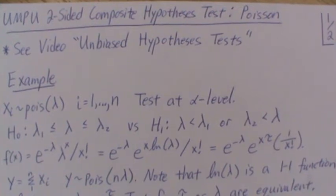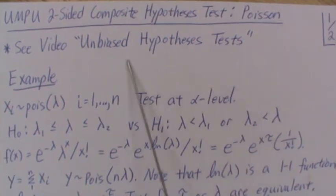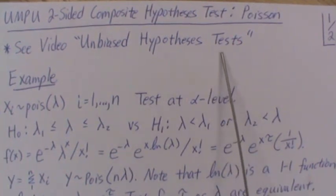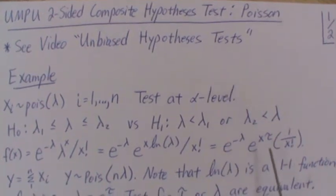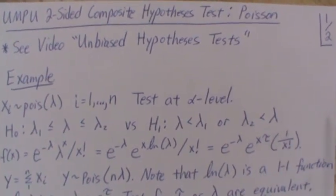Now, the theorem that we're using to conduct this test or derive the test is in this video here, unbiased hypothesis test, which is earlier in this playlist, and the theorem we stated but not proved. In a later video we'll prove that theorem, but we're going through several examples first.